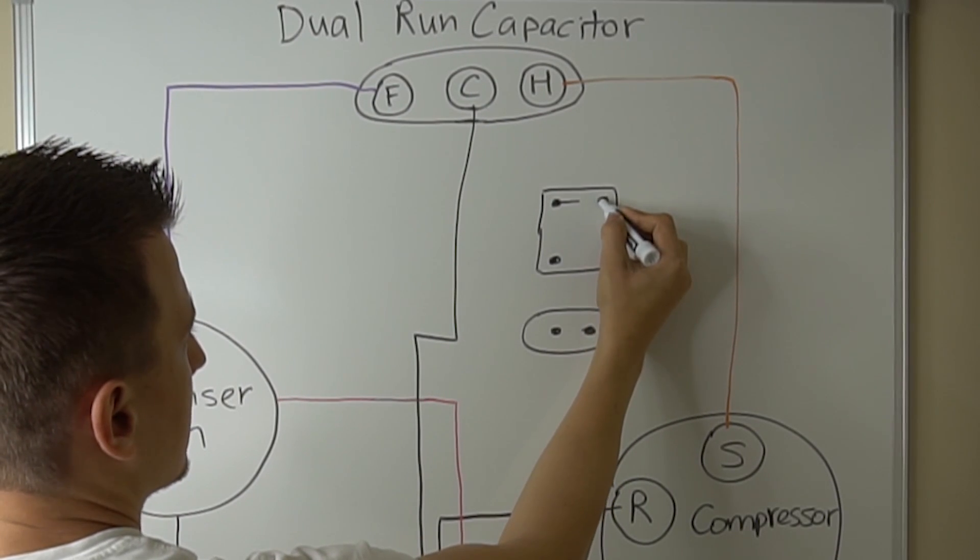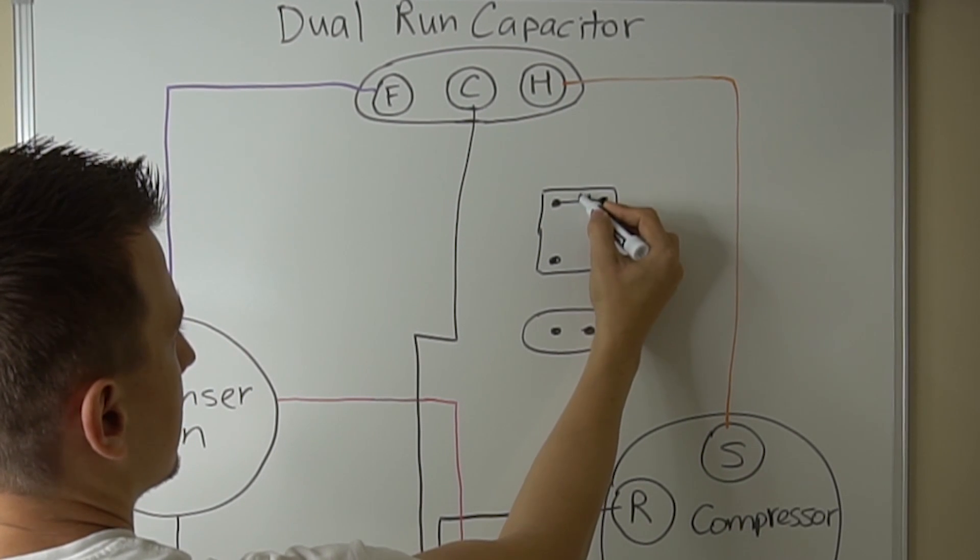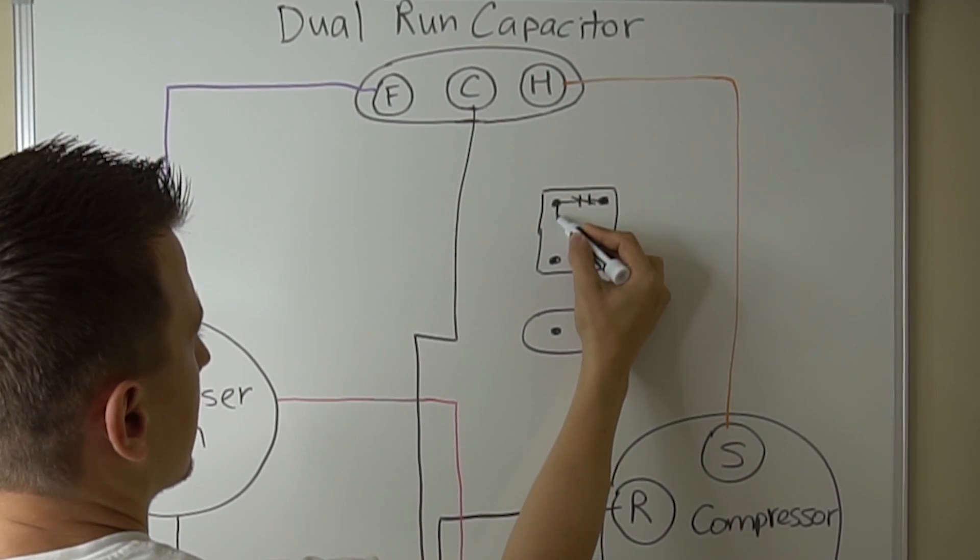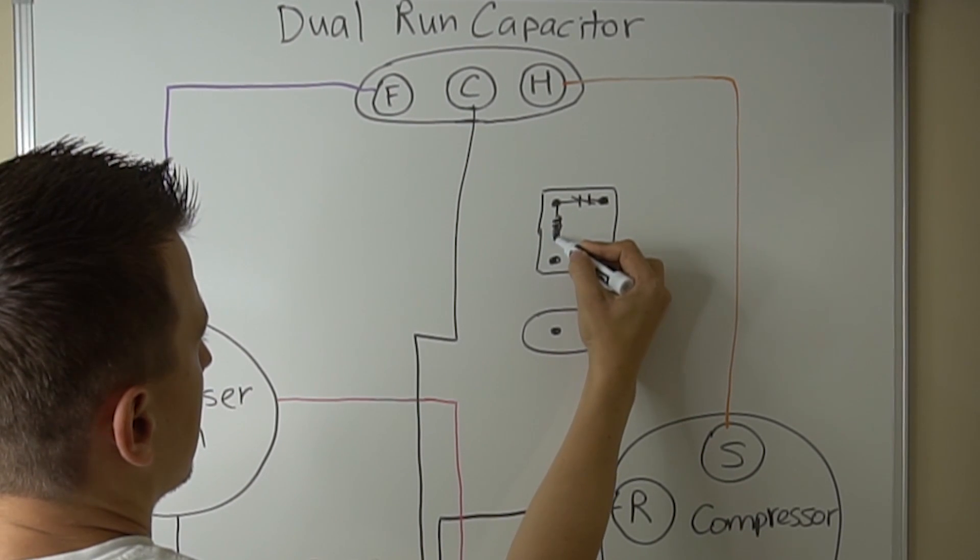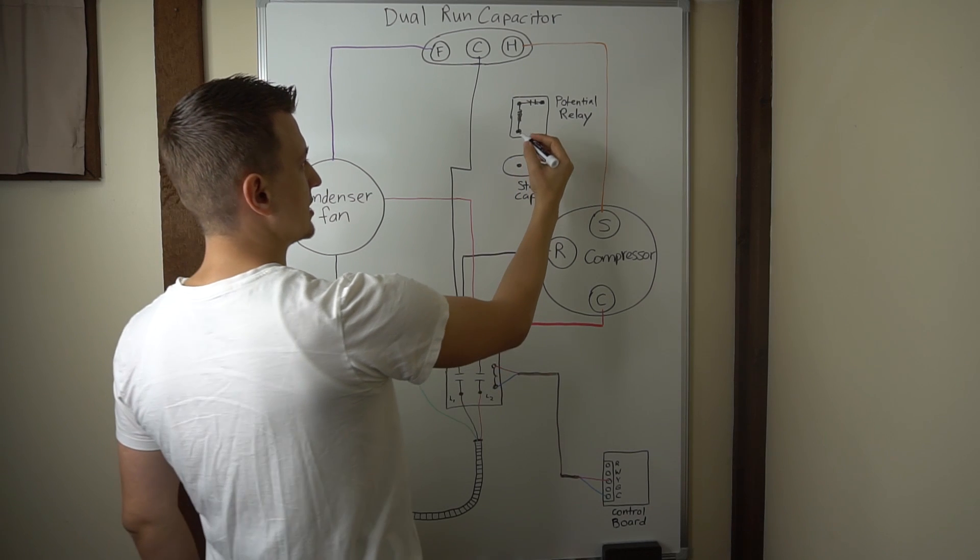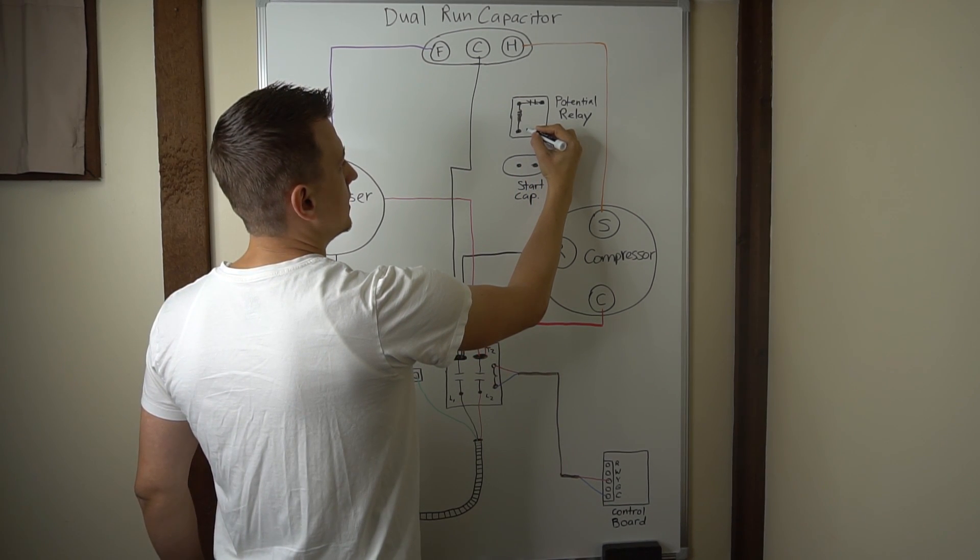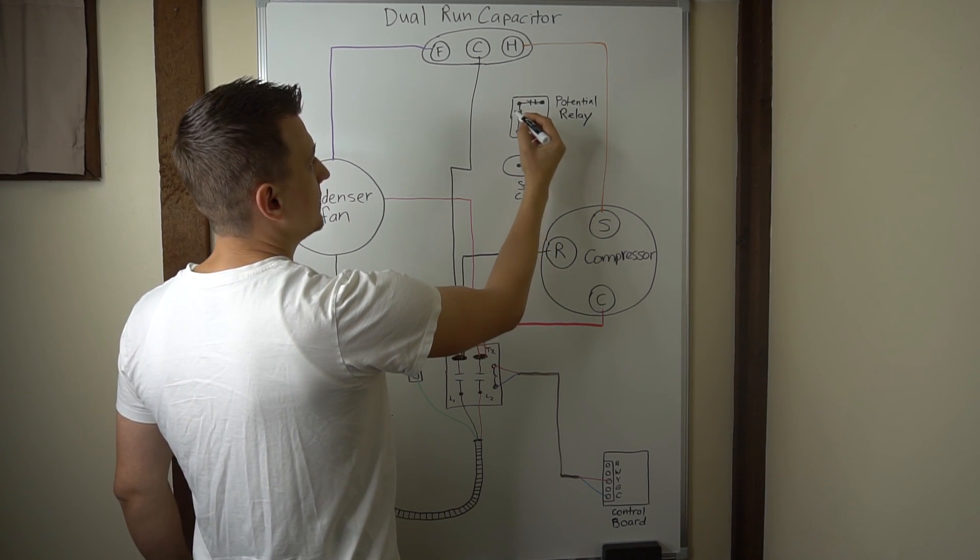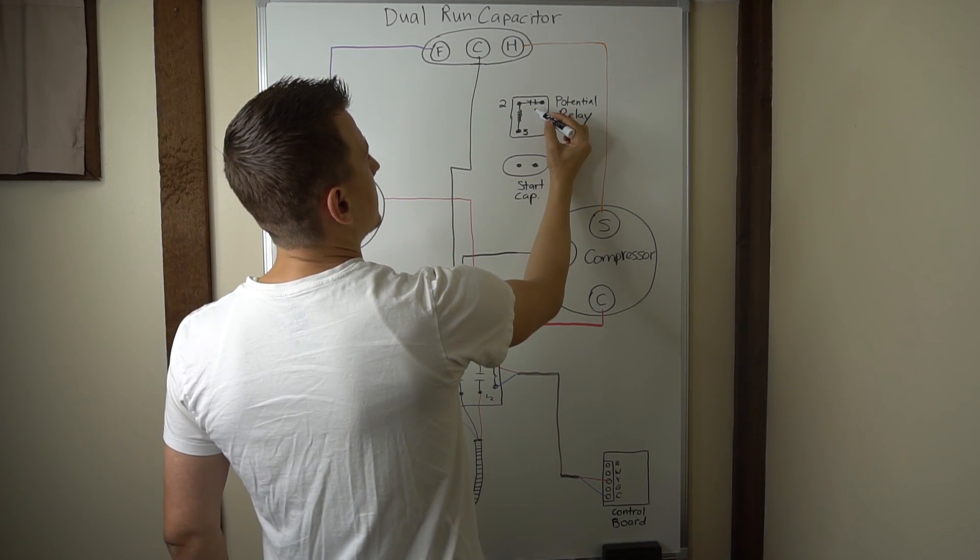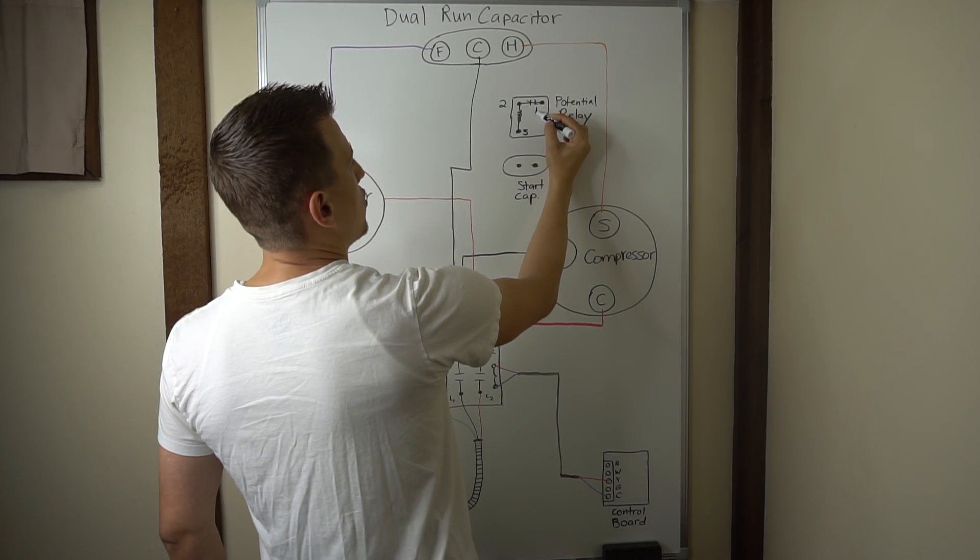There's going to be a normally closed switch here. Looks like that. And then a coil here. So let's label the terminals on our potential relay. This right here will be 5. This one is 2. And this one over here is 1.